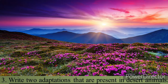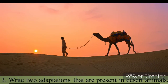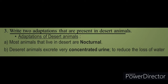The third short answer question: write two adaptations present in desert animals. Think of desert animals such as certain rodents like mice and camels. The first adaptation: most animals that live in the desert are nocturnal — they are active during night time. Animals active during daytime are called diurnal; active during night time are called nocturnal.